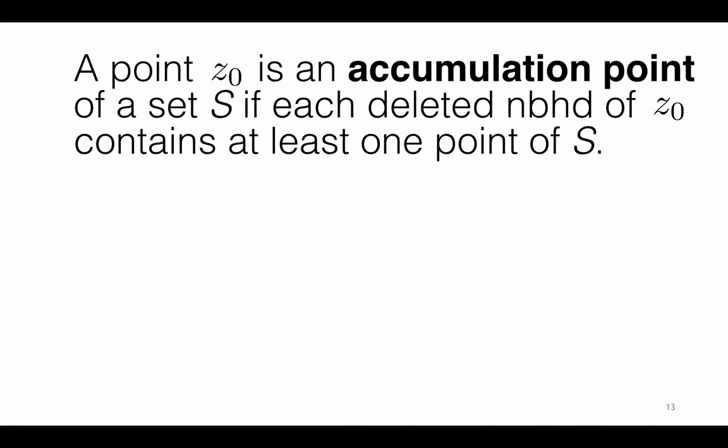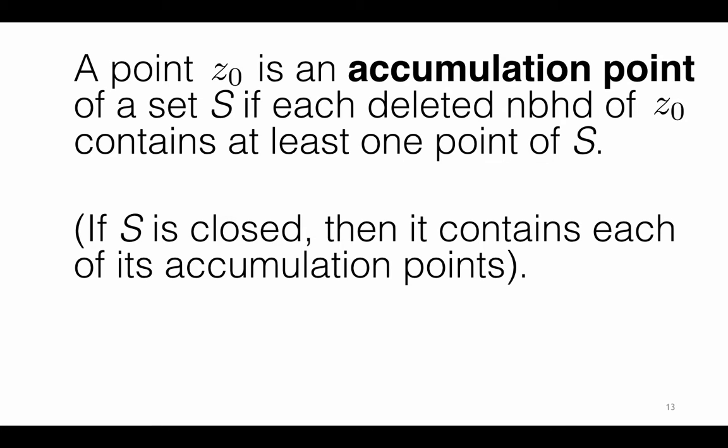A point z0 is called an accumulation point of a set S if each deleted epsilon neighborhood of z0 contains at least one point of S. It follows that if S is closed, it must contain each of its accumulation points — because if an accumulation point z0 were not in S, it would be a boundary point not contained in S, contradicting closedness. The converse is also true: if a set contains each of its accumulation points, then S is closed. A point z0 is not an accumulation point of S whenever we can find a deleted neighborhood of z0 containing no points of S.